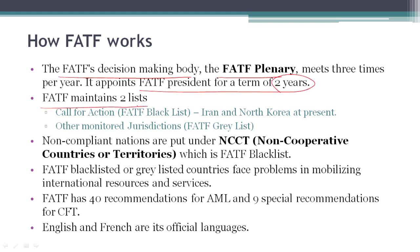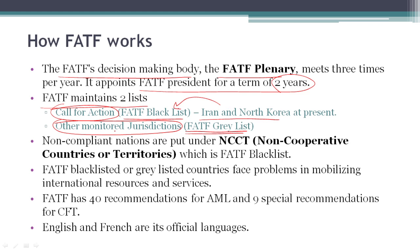FATF has two lists mainly: the FATF blacklist and the FATF graylist. The blacklist is also called the list for call of action, and the graylist is also called other monitored jurisdictions. As of now, only Iran and North Korea are present in the FATF blacklist. Non-compliant countries can be put under NCCT — that is, non-cooperative countries or territories list — which is also called the FATF blacklist.